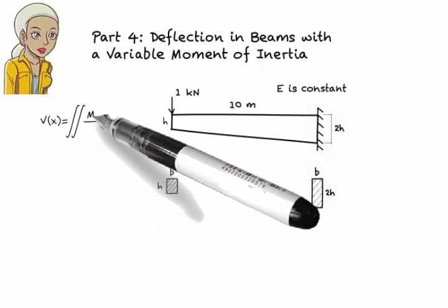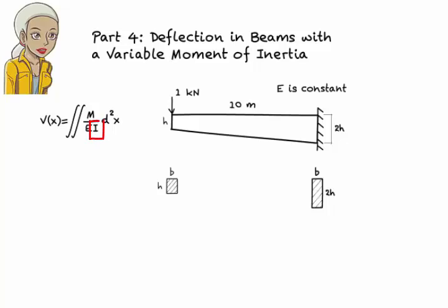We know the general equation for deflection, but here moment of inertia I cannot be treated as a constant as it varies with x. So we need to write I as a function of x before we can integrate M over EI.